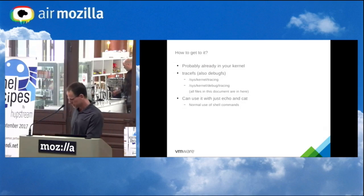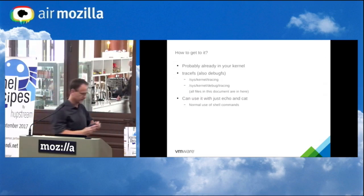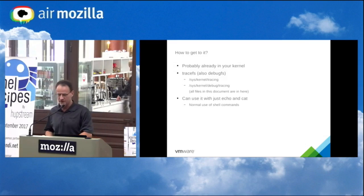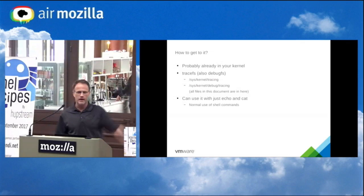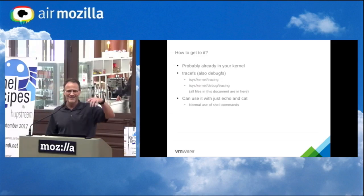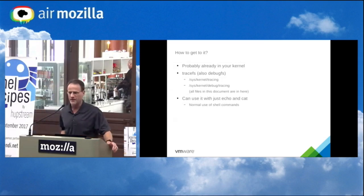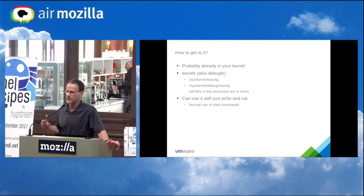How do you get F-Trace? How many people have heard of F-Trace? It's a kernel thing, and I'm constantly told that I don't market it well enough. It's in something called TraceFS. It used to be DebugFS, but we removed the dependency and created our own TraceFS. When you mount DebugFS at sys/kernel/debug, there's a directory called tracing.